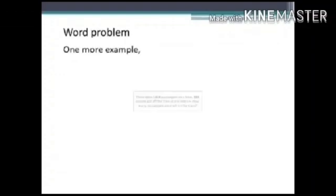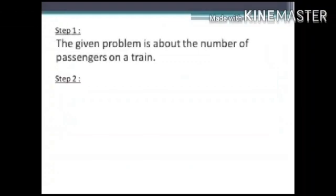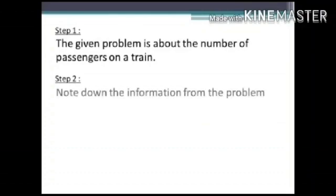Let us take up one more example. There were 1424 passengers on a train. 289 people got off the train at one station. How many passengers were left on the train? Step 1: The given problem is about the number of passengers on a train. Step 2: Note down the information from the problem.